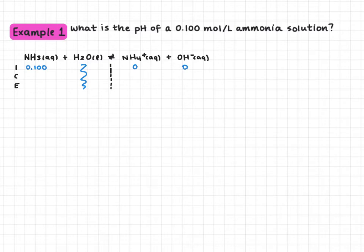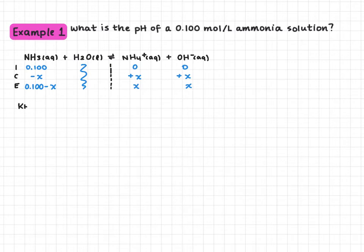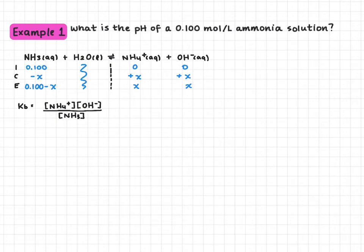Our next step is to complete the rest of the ICE table using X's for our unknowns. For a weak base, unlike for a weak acid, we're not going to use Ka — we're going to use Kb. Kb is our base ionization constant. We'll have NH₄⁺; it's the same as any equilibrium constant — products raised to their coefficients over reactants. The only difference is Kb is not found directly in our table, so we actually have to use Ka to calculate Kb.